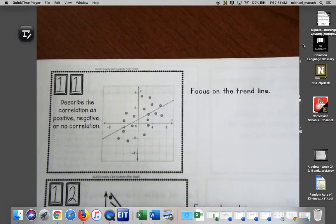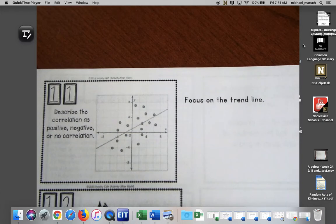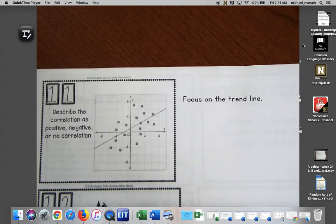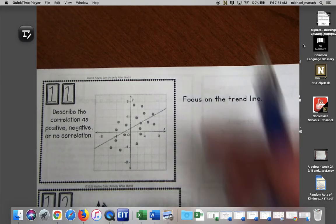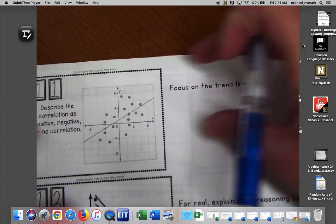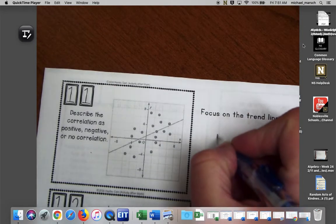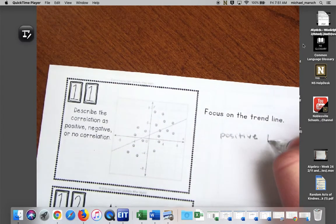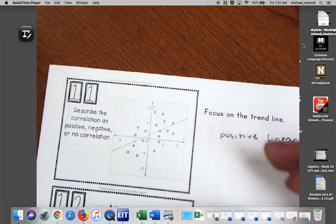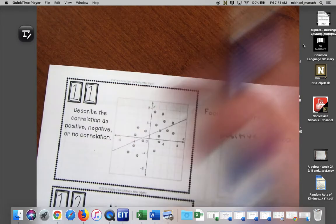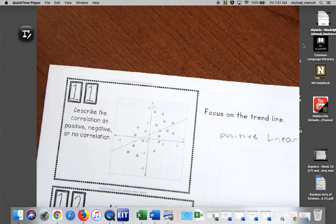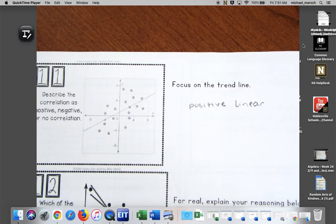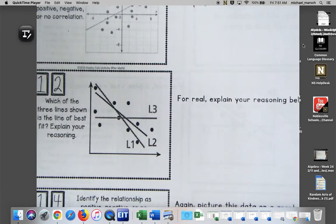We skipped a couple cards, now we're on number 11 here. Describe the correlation as positive, negative, or no correlation. They drew a trend line. Probably what happened is that this is a lot of data, so you would be able to see more of that trend. We're going to say positive and we could say linear because I want to believe that if I were to zoom out there's tons of those dots expanding in both directions.